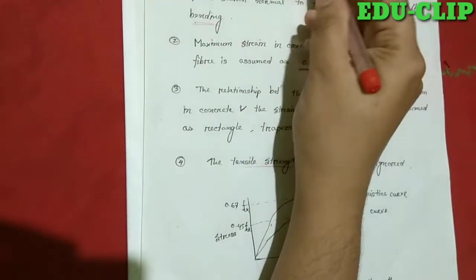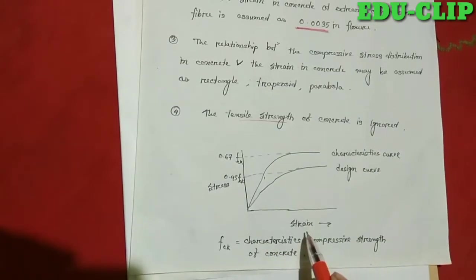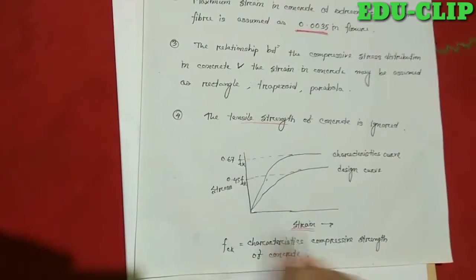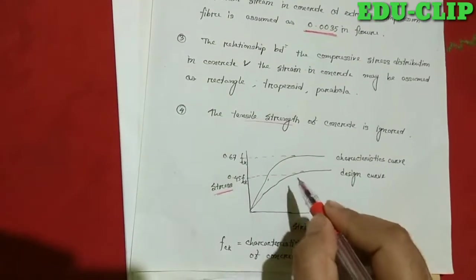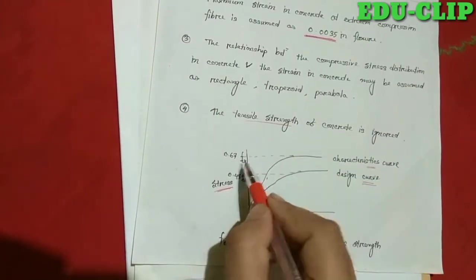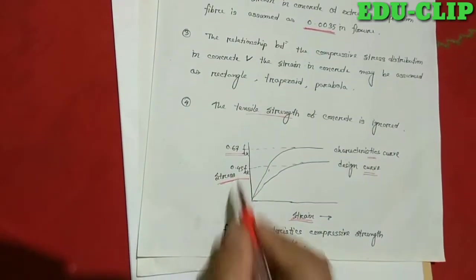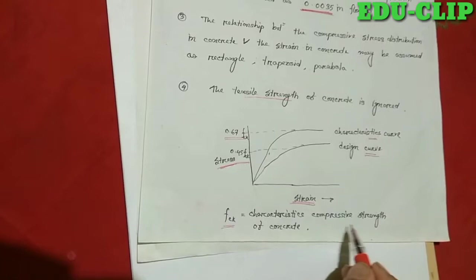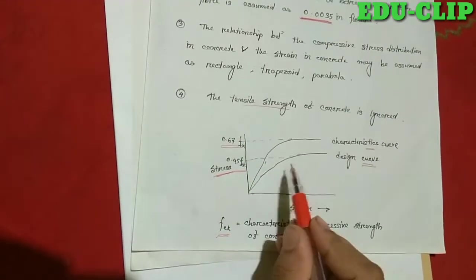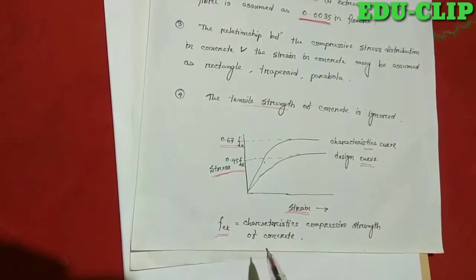To calculate this ultimate flexural strength, we will use the stress-strain curve graph. Two curves are shown here: one is the characteristics curve and the other is the design curve. The characteristics curve has 0.67 FCK, and the design curve has 0.45 FCK, where FCK is the characteristic compressive strength of the concrete. We will use this stress-strain relationship to get the ultimate flexural strength of the RC section.